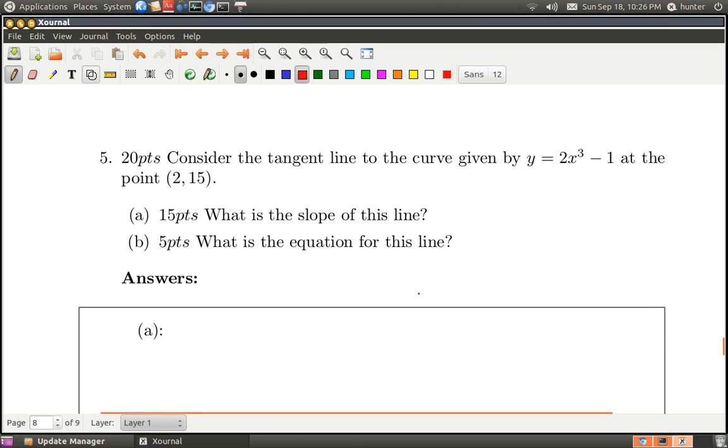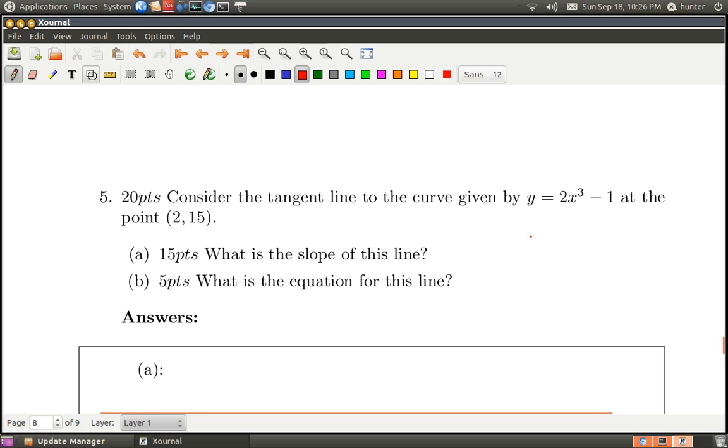So it says consider the tangent line to the curve given by y equals 2x cubed minus 1 at the point. And let me just try to draw a picture of this, so it's not going to be very helpful but it might make it less scary somehow.